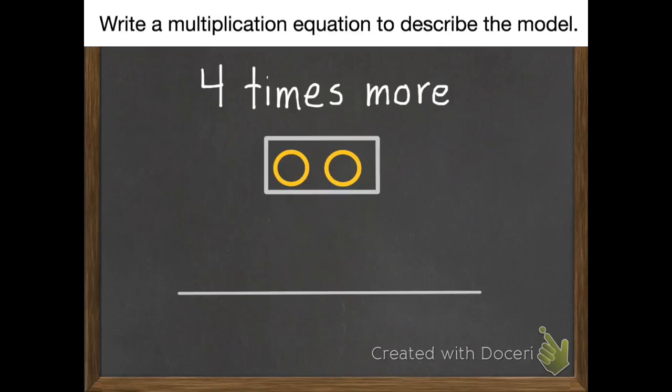If you're still a little confused, you can go back and watch my example again. Okay, so four times more than two is four times two equals eight.